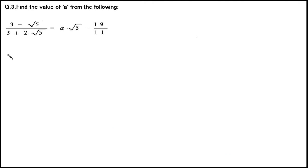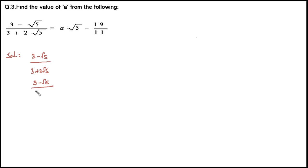Students, let's look at the third question. Here we have to find the value of A, and the rational part will be in the form of a fraction. The given question is (3 − √5) / (3 + 2√5). In order to simplify, let's do the rationalization of the denominator. That is (3 − √5) / (3 + 2√5) multiplied by (3 − 2√5) / (3 − 2√5).